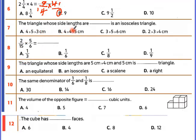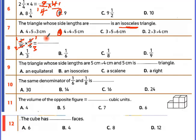The triangle whose side lengths are given — two sides equal, it's isosceles. Now simplify: divided by 2 gives 1, divided by 2 gives 3, divided by 5 gives 1, divided by 5 gives 3. Then 1 times 1 is 1, 3 times 3 is 9, giving 1 over 9.